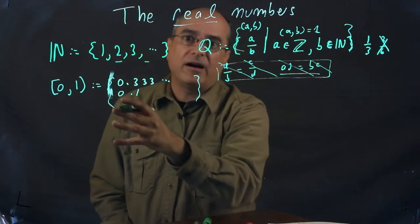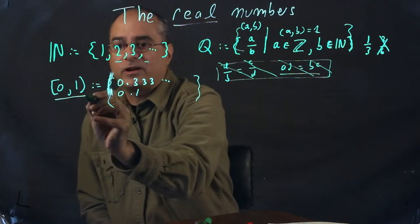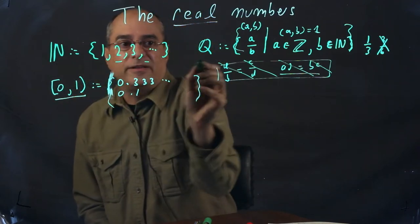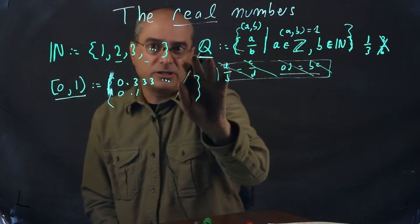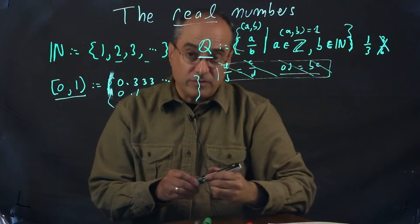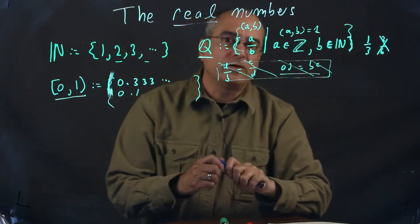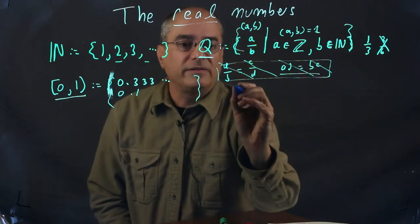Now, we have our two sets, we'll use this as our fragment of the reals, and this as our rational numbers. We want to show that this set is much larger than this set. To do that, we need some tools for set theory. What we need is Cantor's theorem.